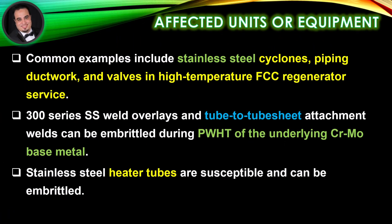Affected units or equipment. Common examples include stainless steel cyclones, piping ductwork, and valves in high-temperature FCC regenerator service. 300 series stainless steel welds, weld overlays, and tube-to-tube sheet attachment welds can be embrittled during post-weld heat treatment of the underlying chromium-molybdenum base metal. Stainless steel heater tubes are also susceptible and can be embrittled.